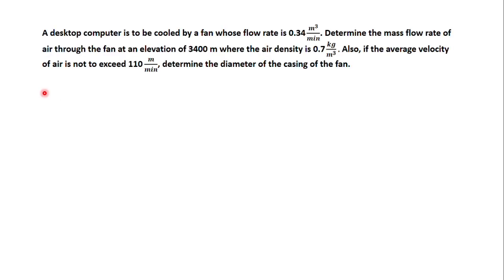In this problem, a desktop computer is to be cooled by a fan whose flow rate is 0.34 cubic meter per minute. Determine the mass flow rate of air through the fan at an elevation of 3,400 meters where the air density is 0.7 kilogram per cubic meter. Also, if the average velocity of air is not to exceed 110 meter per minute, determine the diameter of the casing of the fan.